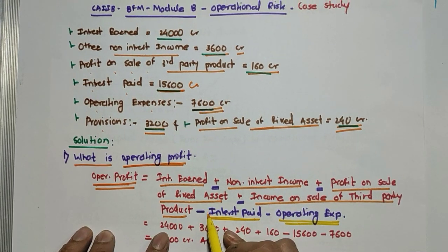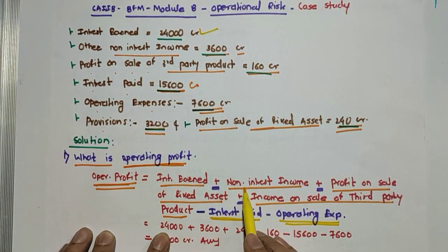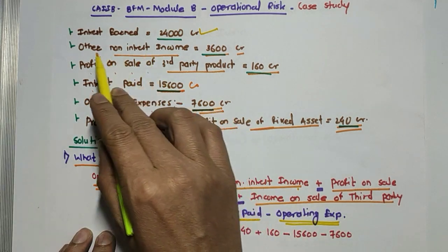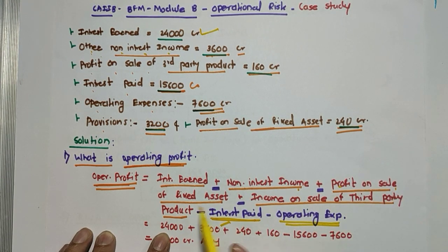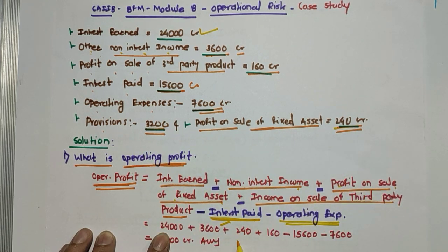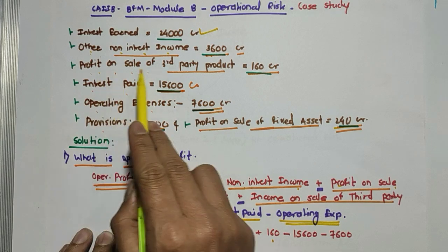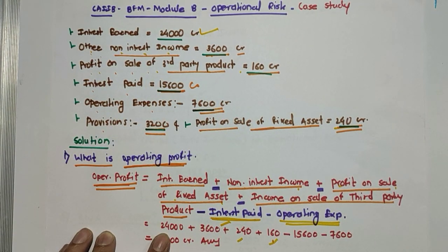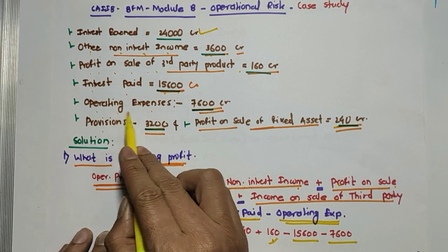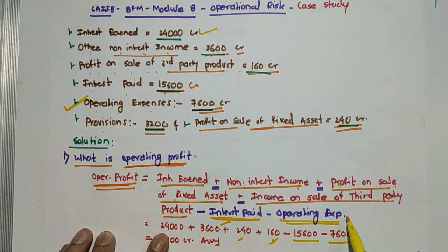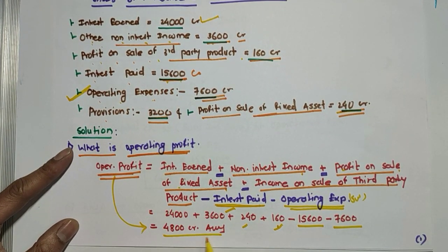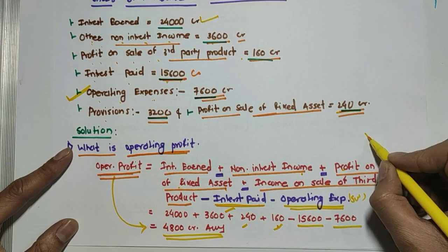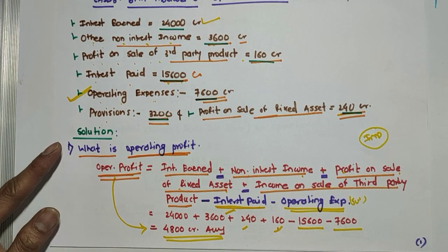Just put in the values. Interest earned is 24,000, non-interest income is 3,600 CR, profit on sale of fixed asset is 240, and profit on sale of third party product is 160. Subtract interest paid of 15,600 and subtract operating expenses of 7,600. When you solve this, you will get the operating profit directly. The key is to remember the formula.